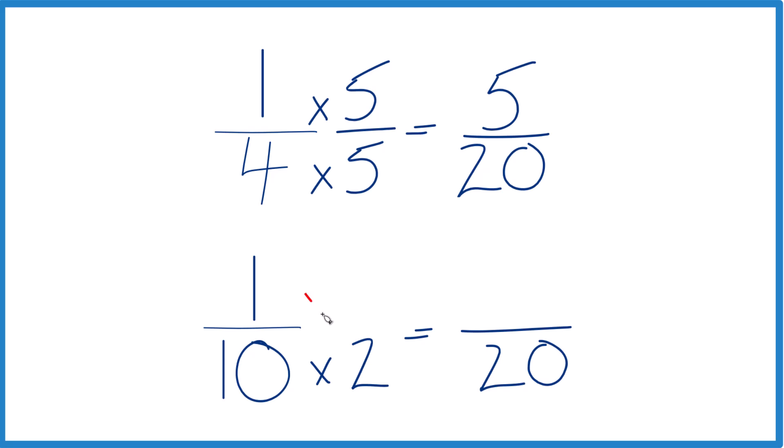Down here, let's multiply by 2. That's really 2 over 2. 1 times 2 is 2, and 2 twentieths, same thing as 1 tenth, same value.